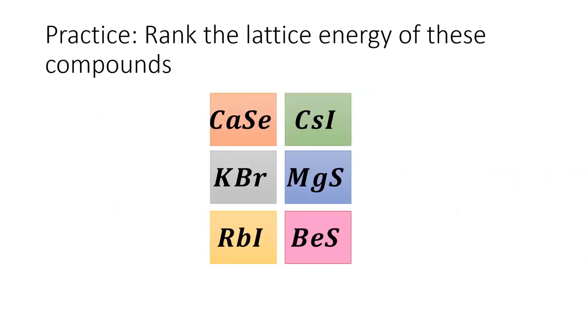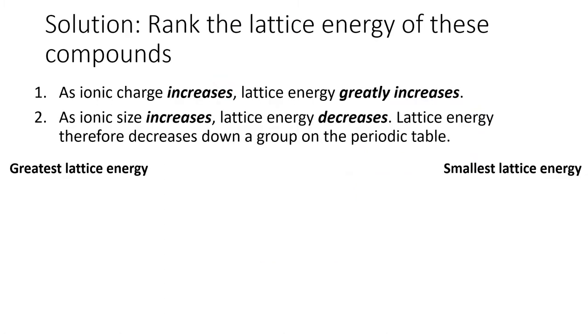Time for a practice. Rank these compounds by decreasing lattice energy. To answer this question, we need to keep in mind the two things affecting lattice energy. First and most importantly is the ion charge with larger charges indicating much stronger lattice energies. The tiebreaker is ionic size with smaller ions indicating stronger lattice energies because the charges can get closer together. You won't be able to answer this question without looking at the periodic table.